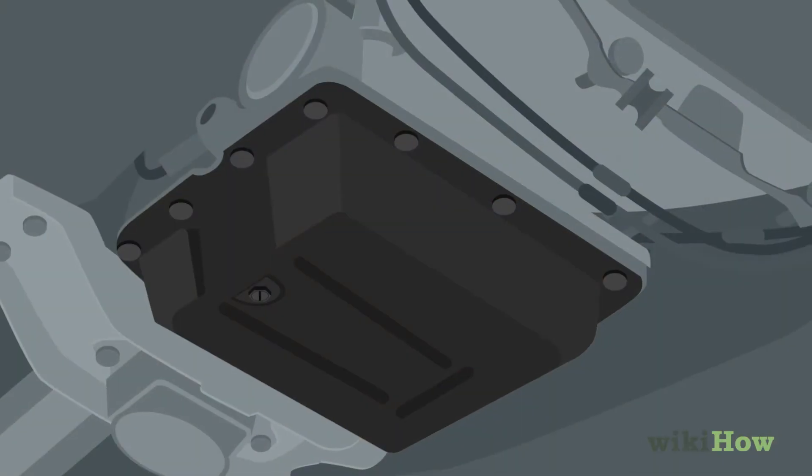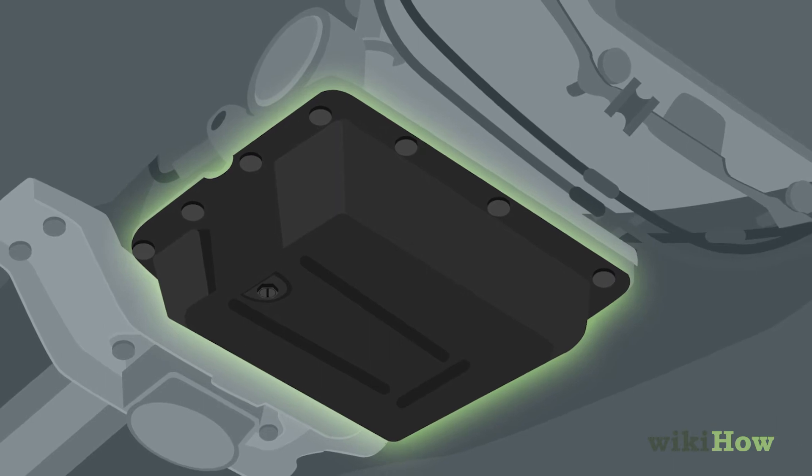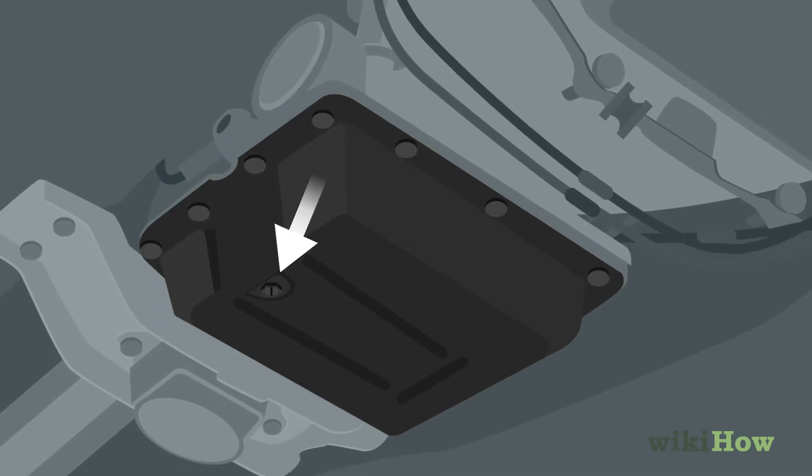Find the transmission fluid pan by looking for a flat metal plate in the middle of the vehicle with a fingertip-sized nut on it.